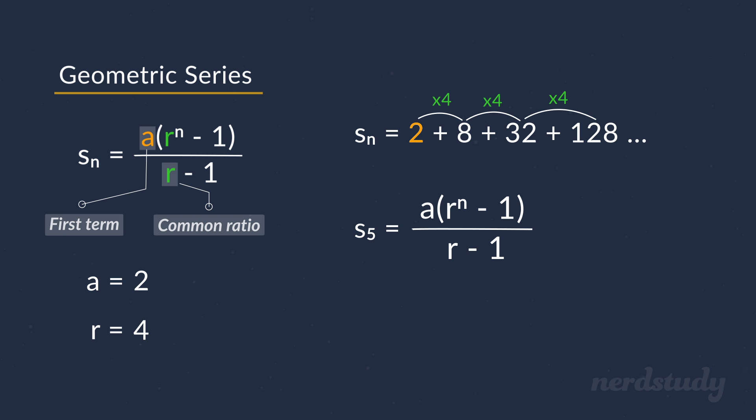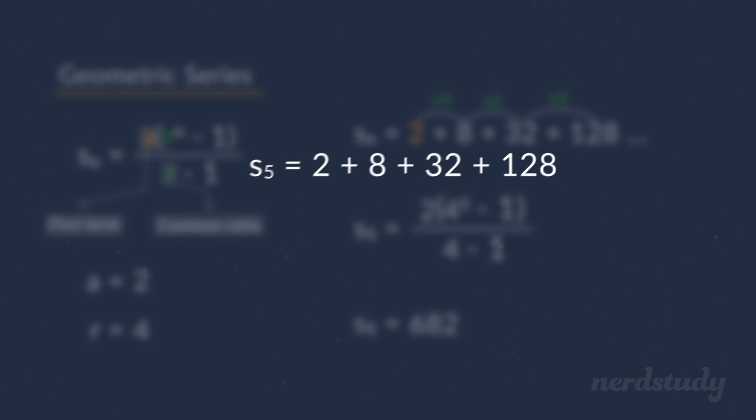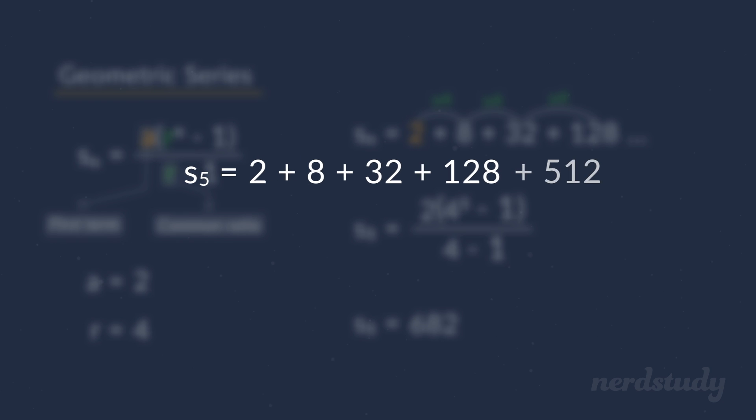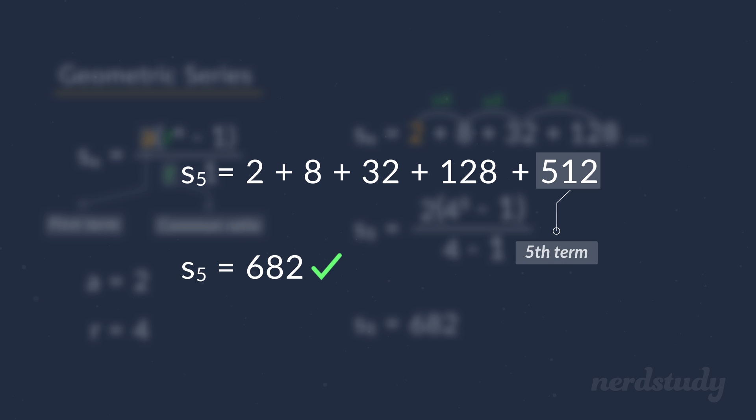So we can go ahead and plug the following values into the variables. And of course, we already know that our n is equal to 5. And now we can solve for this. Simplifying this gives us 2 times 1023 all over 3. And computing this gives us a final value of 682 as the sum of all the terms in this series up to the fifth term. Awesome!